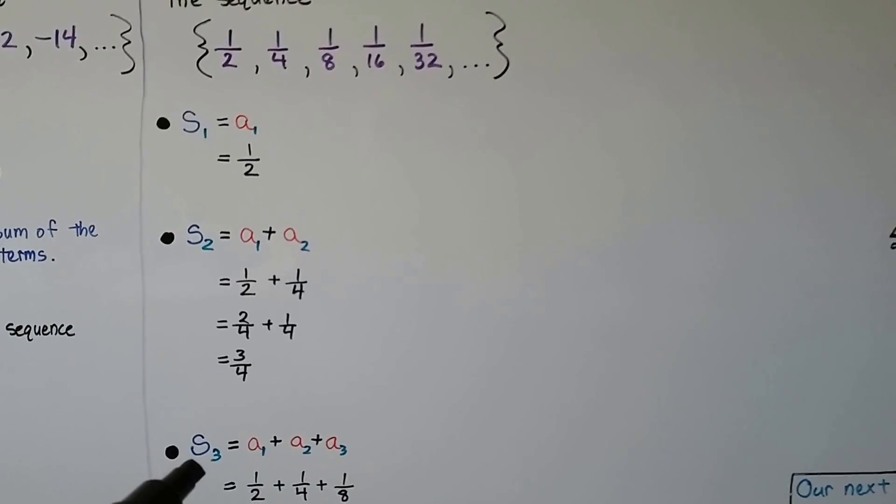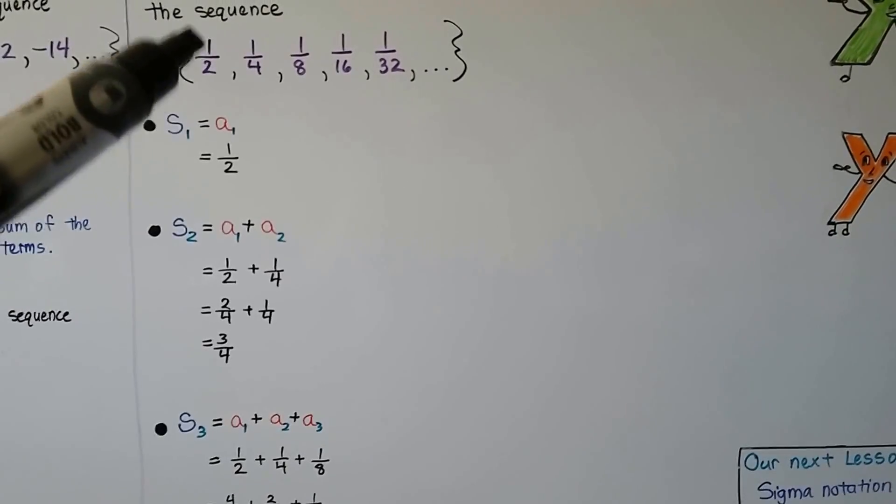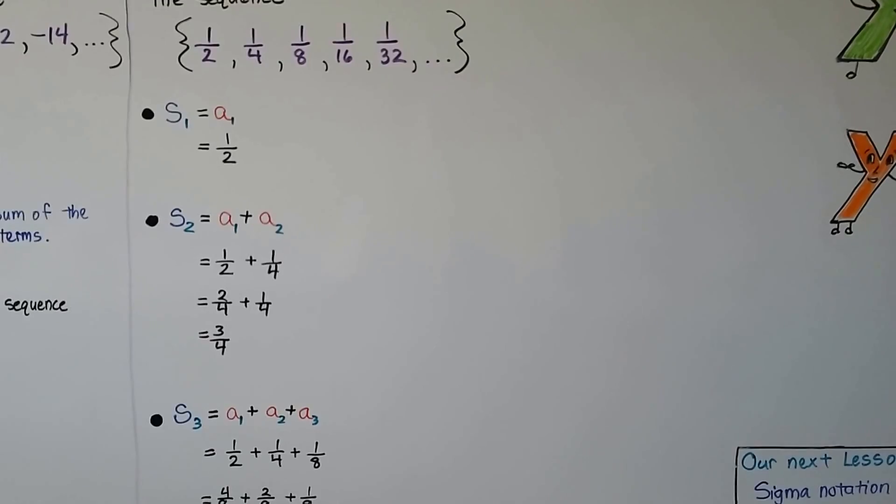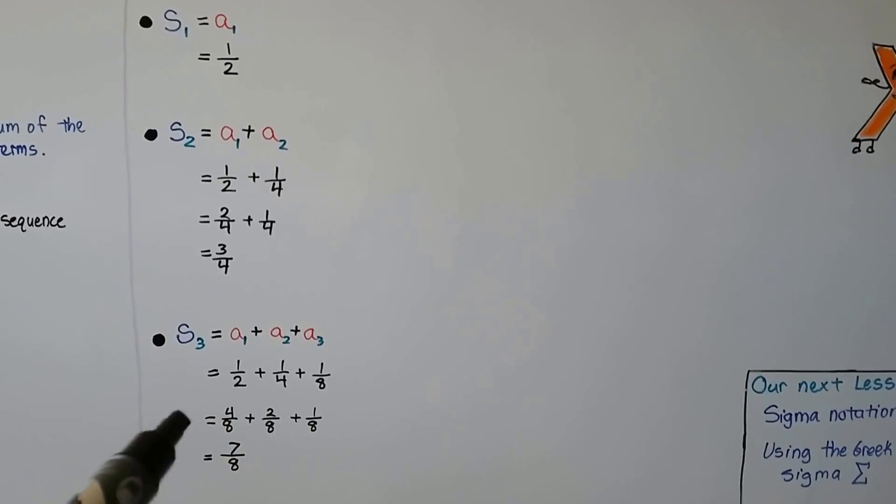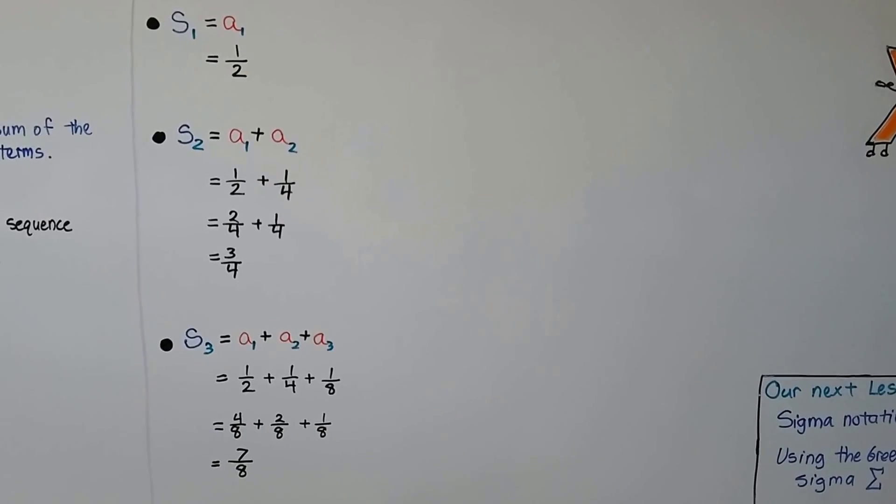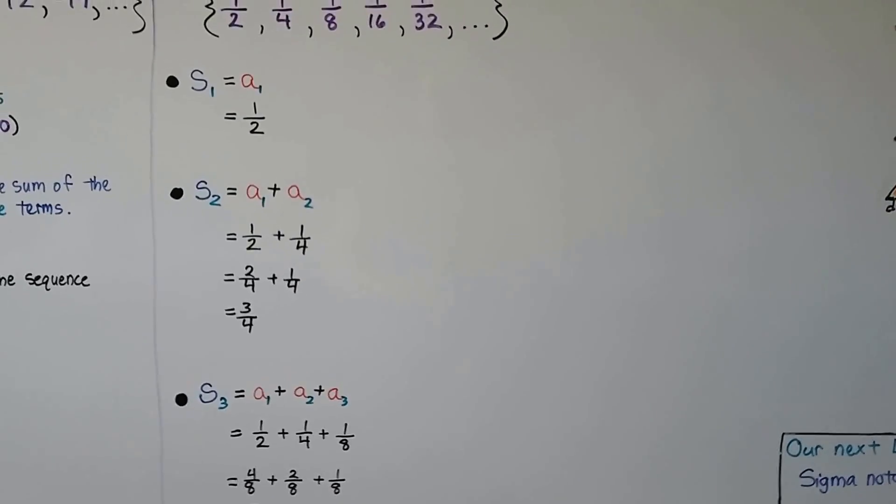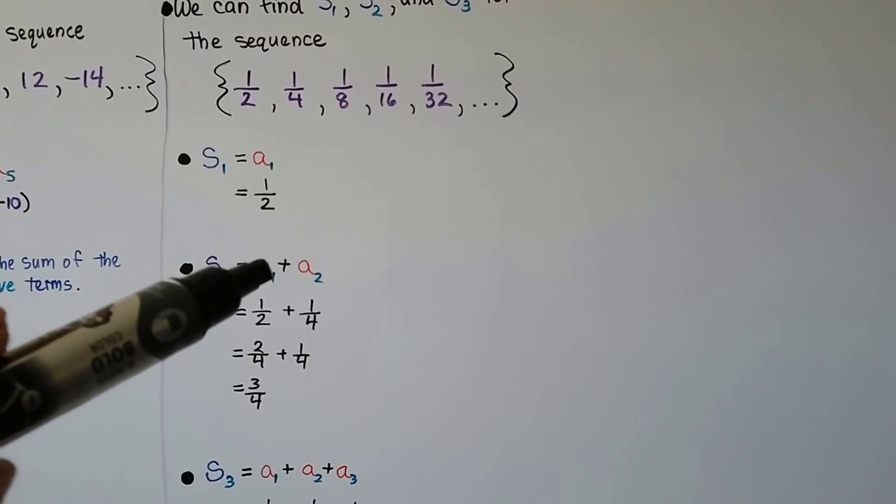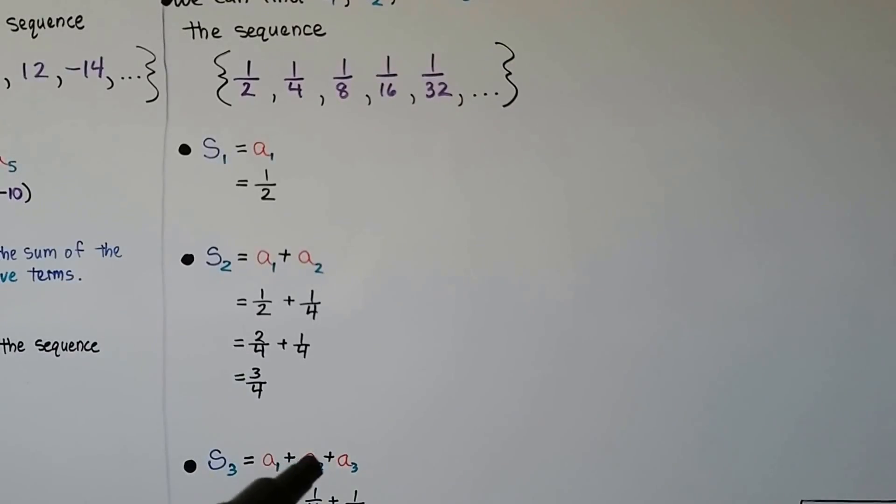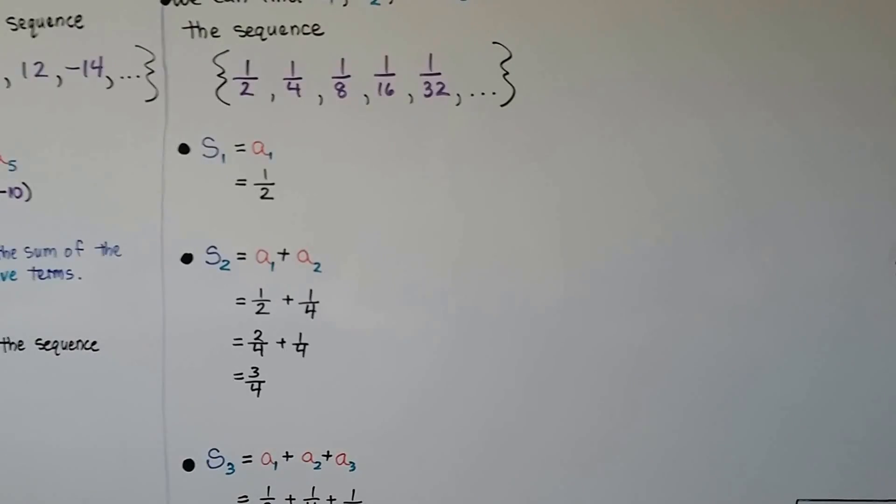For the first three terms, that's 1/4, 1/2, and 1/8. It doesn't matter what order we add them in. We get common denominators and get 7/8. So S_1 would be the first, S_2 would be the first and second added together, and S_3 would be the first, second, and third term added together.